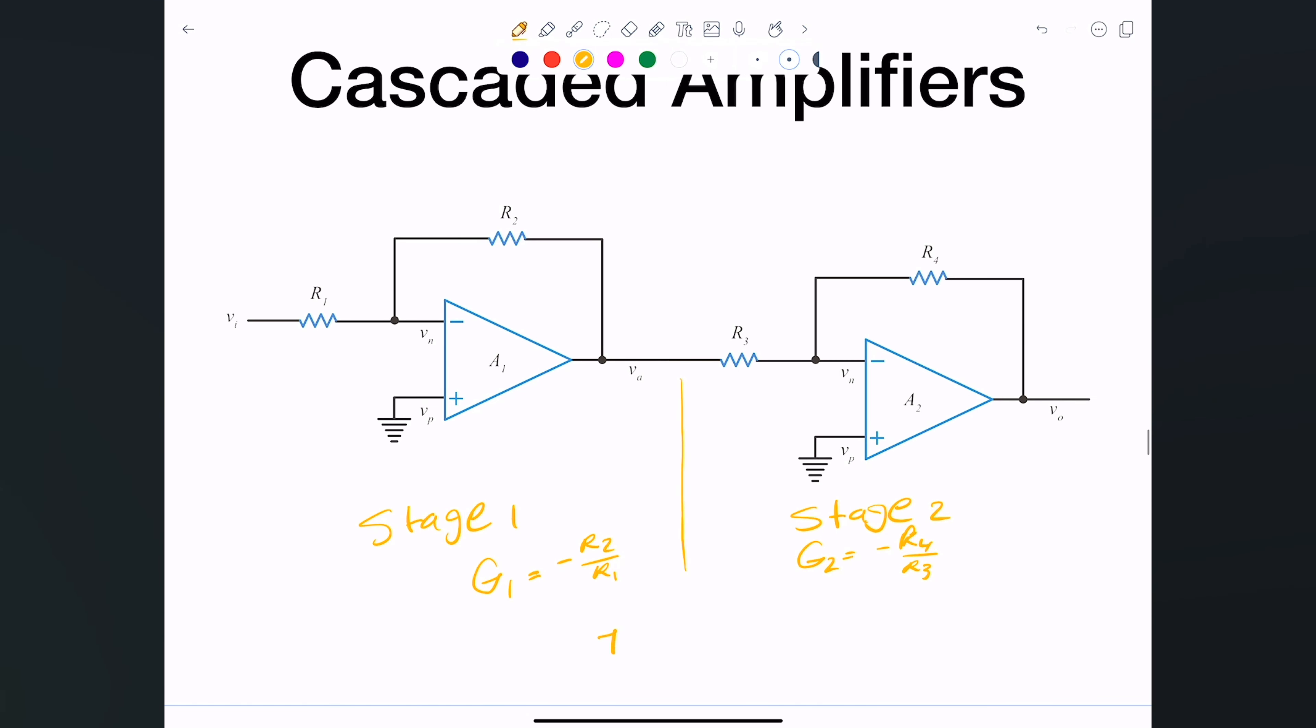As it turns out, the general or the total gain, the closed loop gain, will simply be the stage one gain times the stage two gain, and that will be simply R2 times R4 divided by R1 times R3. Of course I've done it this way without any proofs, but we can actually take a look at the proof very quickly.